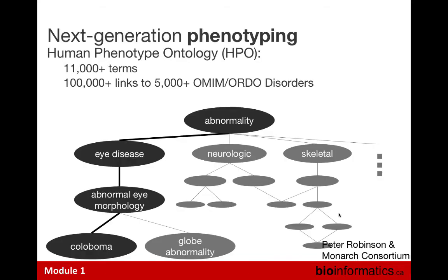The same thing happens in biology with something called the Human Phenotype Ontology, which organizes medical knowledge especially in the genetic disease space — from something very general like 'abnormality' down to eye diseases, abnormal eye morphology, and more specifically coloboma versus globe abnormality. It has over 12,000 terms now and is linked to OMIM, a database of diseases, so that given a list of phenotypes you can ask what diseases that matches. It's really become the lingua franca of the rare disease field — much better than SNOMED CT for genetic diseases specifically.